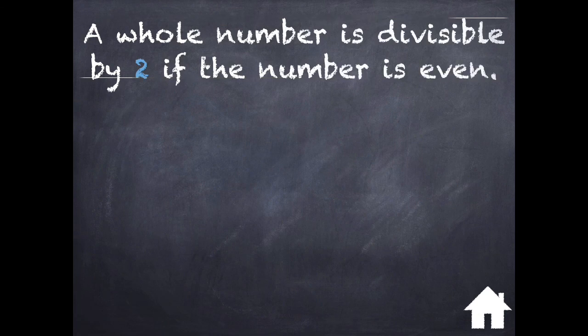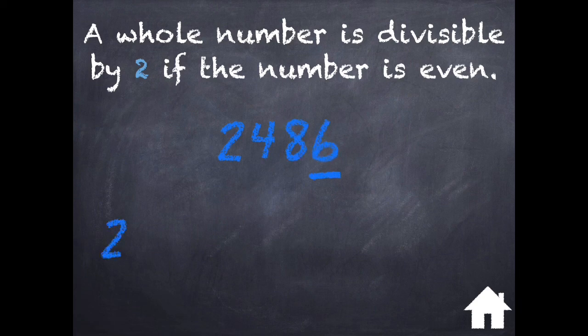A whole number is divisible by 2 if the number is even. For example, let's take a look at the number 2486. We can tell it's an even number because there is a 6 in the 1's place value.